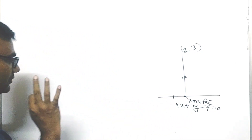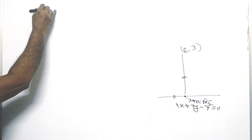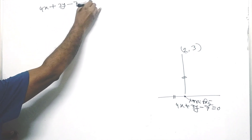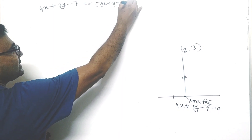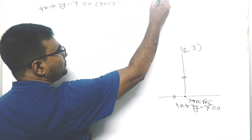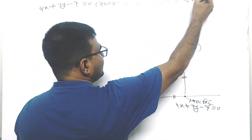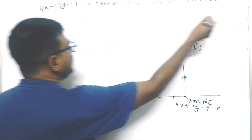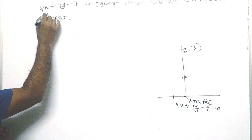Now let's see the process. For line 4x + 3y - 7 = 0, M1's value equals 0. The lines should be parallel, giving us a value of 0.